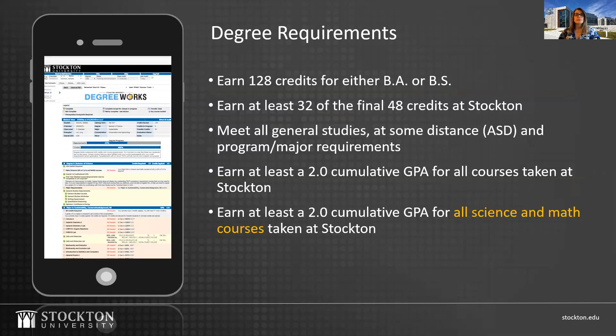Every semester, you'll meet with your assigned preceptor to carefully select your classes for the following semester. The DegreeWorks account will help you keep track of the courses you need to take to complete your degree. To graduate, you'll have to earn a minimum cumulative Stockton GPA of 2.0. It's important to note that all NAMS majors have to earn a minimum GPA of 2.0 in all their science and math classes.